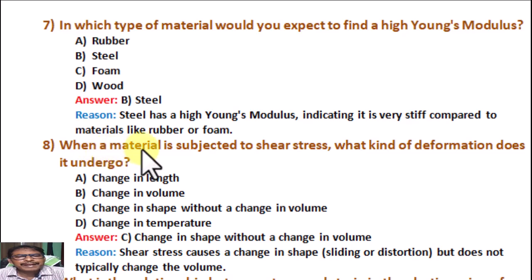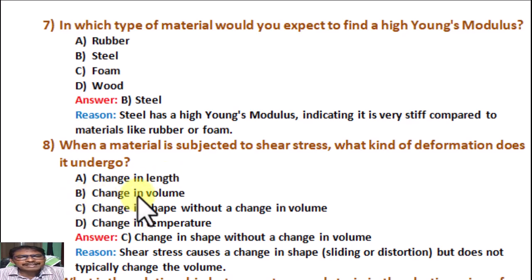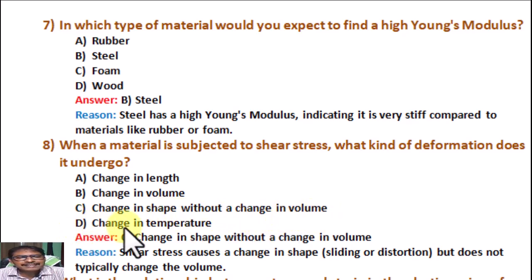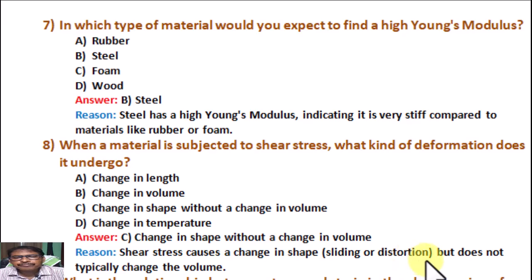Question number 8. When a material is subjected to shear stress, what kind of deformation does it undergo? Option A: Change in length. Option B: Change in volume. Option C: Change in shape without a change in volume. Option D: Change in temperature. Correct answer is C: Change in shape without a change in volume. Reason: Shear stress causes a change in shape — that means sliding or distortion — but does not typically change the volume.